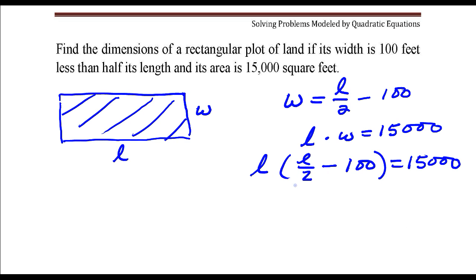L times width L over 2 minus 100. Multiply this L times each of these terms. So that's L squared over 2 minus 100L.